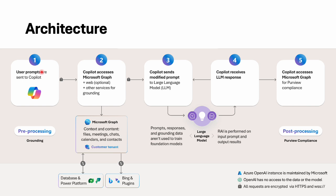At the first layer, all the prompts initiated by the user will be forwarded to Copilot. For example, you have asked to summarize a document or draft a reply for a particular email. That prompt will then be forwarded to the second step, where Copilot reaches out to the services from where it can fetch the information related to the ask.